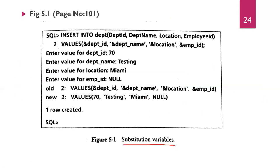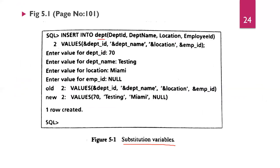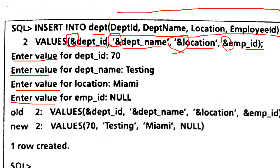For example: INSERT INTO department (department_id, department_name, location, employee_id) VALUES (&department_id, '&department_name', '&location', &employee_id). The ampersand symbol is visible before each column name placeholder. Department ID and employee ID are numbers so they are not enclosed in quotes. Department name and location are character types so they are enclosed in single quotes with the ampersand symbol inside.